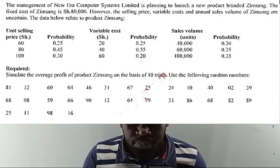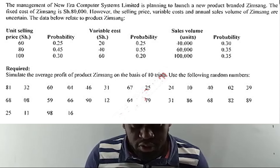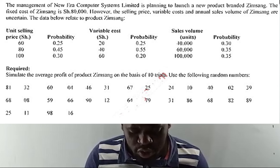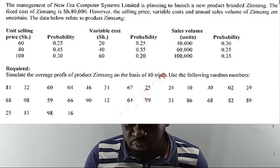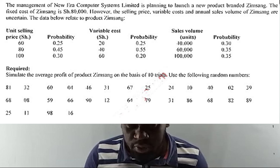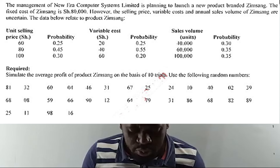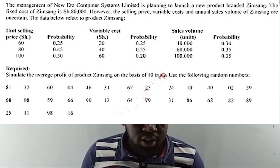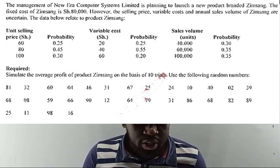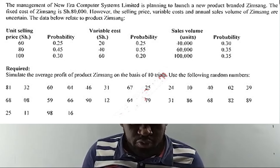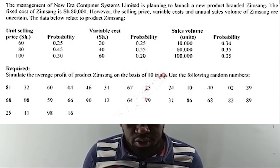The variable cost can be 20, 40, or 60 shillings with probabilities 0.25, 0.55, and 0.20. Sales volume can be 40,000 units, 60,000 units, or 100,000 units with probabilities 0.30, 0.35, and 0.35 respectively. The requirement is to simulate the average profit of product Zimson on the basis of 10 trials.